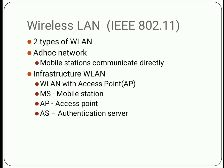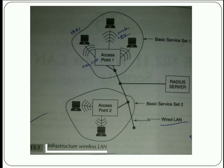From the figure you can see various stations connected to access point 1, and in the lower part another section with wireless stations connected to access point 2. Both access points are connected with a wired LAN. The first part you can call a basic service set and the second part also is another basic service set. The connection is done by an authentication server, which you can call a RADIUS server. This is the concept of an infrastructure wireless LAN.